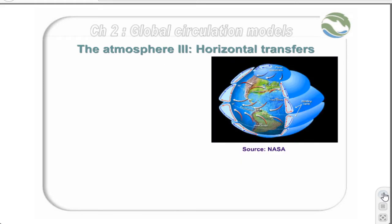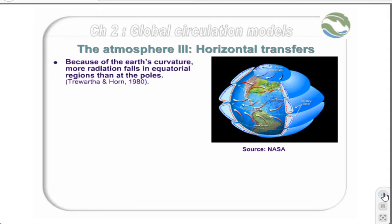Horizontal transfers are a very important component of our atmosphere. Because of the Earth's curvature, more radiation falls in equatorial regions than at the poles. Thus, between 40 degrees north and 35 degrees south, there is a net radiation surplus, whilst near the poles there is a deficit — the Earth radiates more energy outwards than it receives.